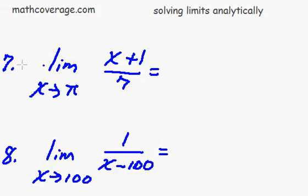Okay, so let's look at this one here, number seven, the limit of x plus one over seven as x approaches pi. So we just do direct substitution and we plug it in. So we have pi plus one over seven. Easy enough.